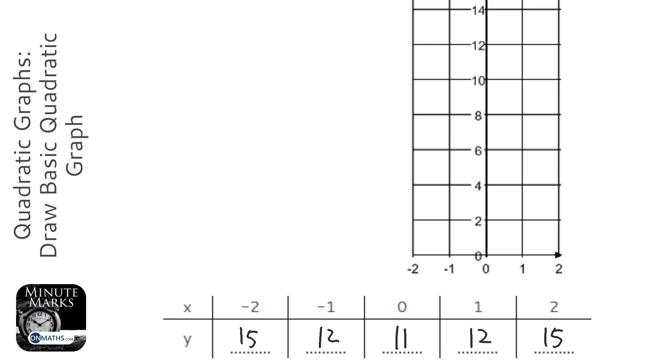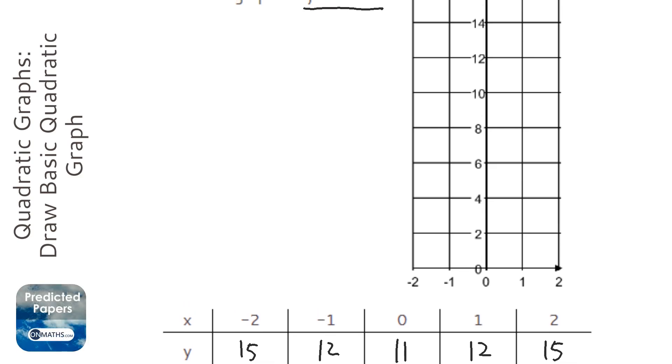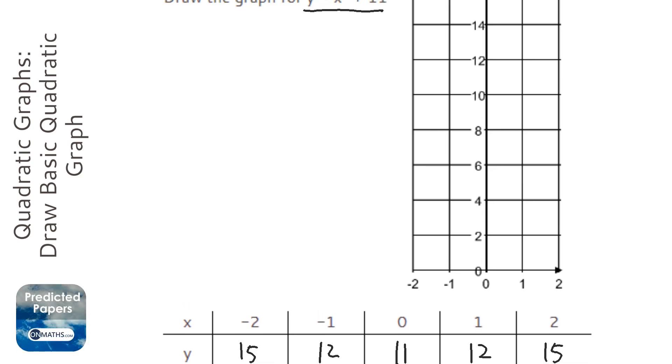Now, we need to plot these on our graph. So what have we got? We've got 15, which is probably roughly there, 12. 11, 12, and 15.